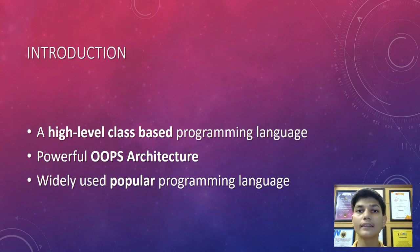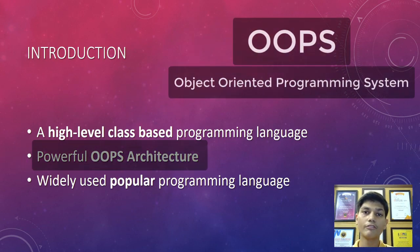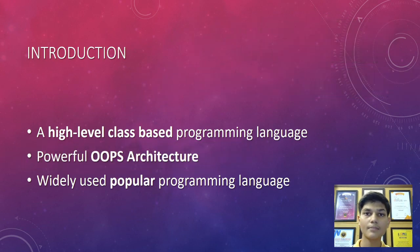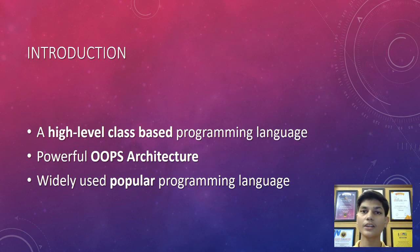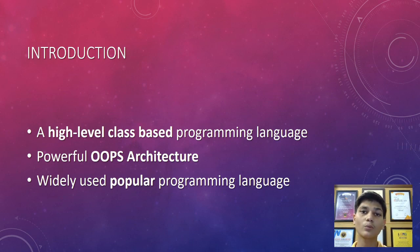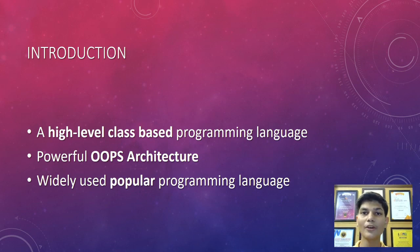Java has a really powerful OOP architecture. It was basically designed by looking at C++, because C++ doesn't have a really powerful OOP architecture — it's a pretty weak one. That is why Java was developed. It has a really strong OOP architecture and is known as one of the best OOP architectures developed till date, which is another major and important key point that defines Java.